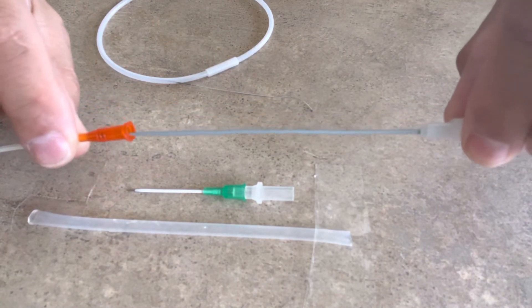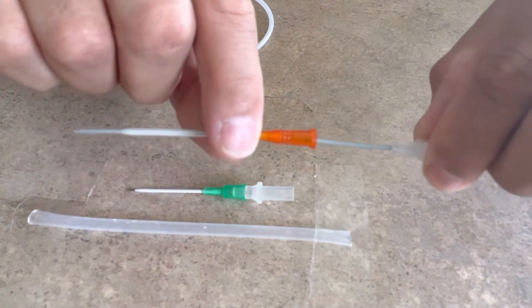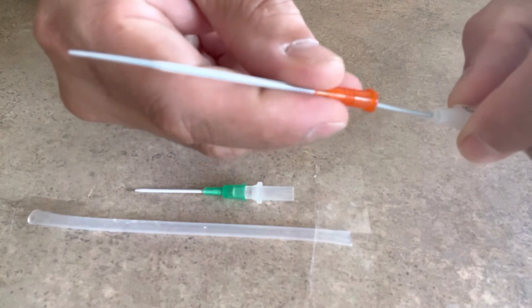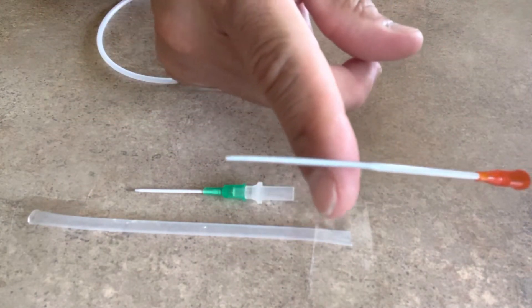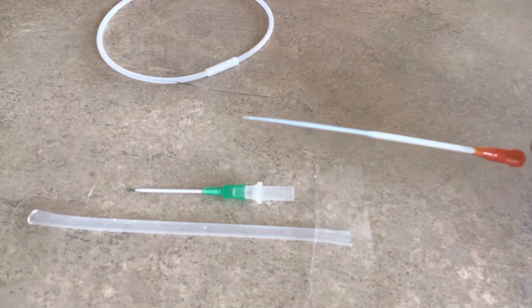And so interesting enough, through experimentation, I actually found out that this 14 gauge angiocatheter slides over perfectly and fits perfectly over this dilator.